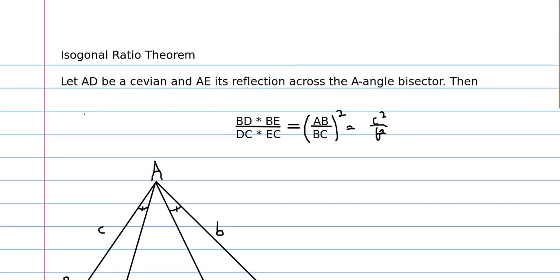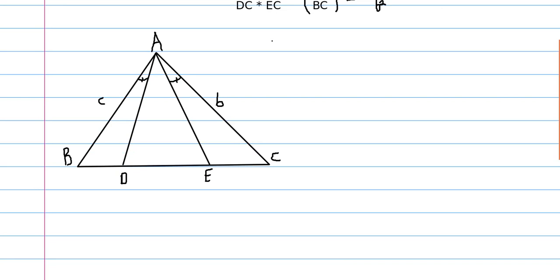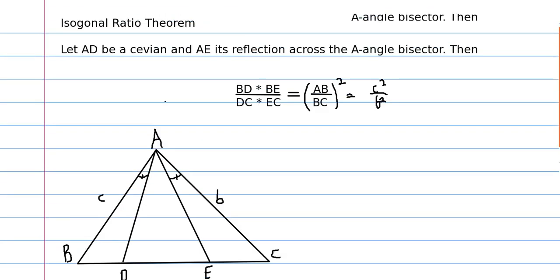This proof is just using the law of sines four times and you have a bunch of equal angles that cancel out when you multiply stuff together. First of all,